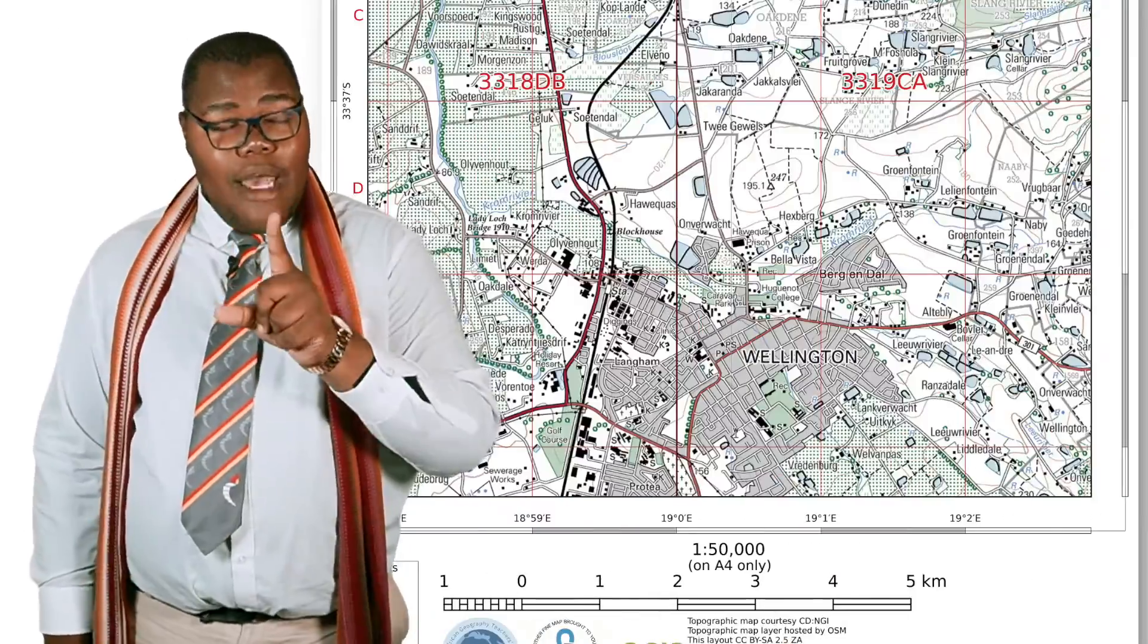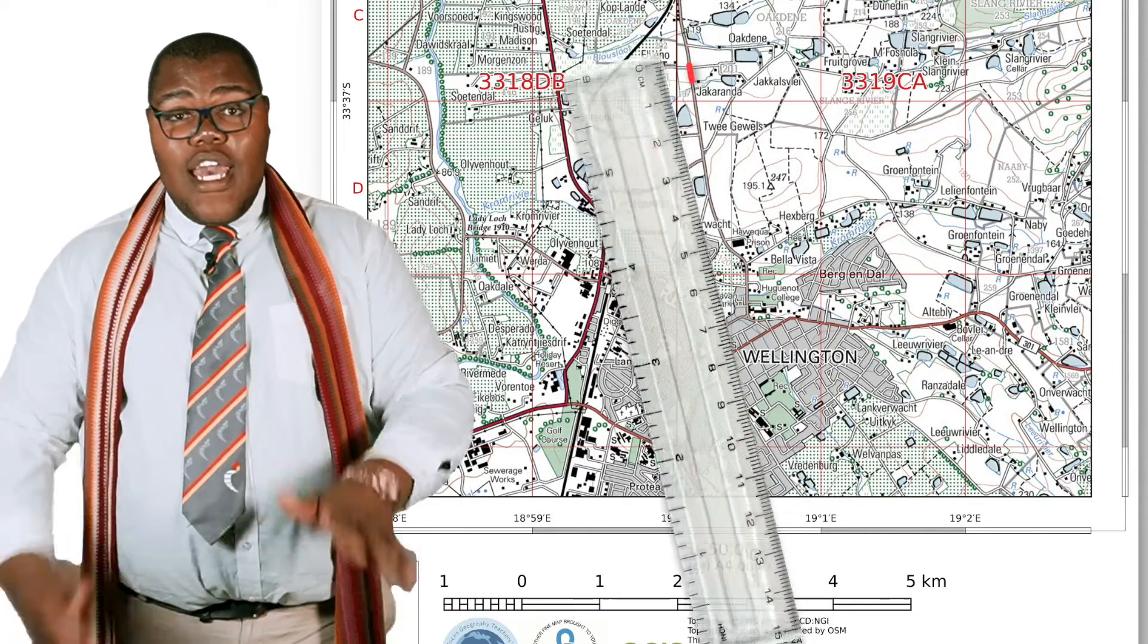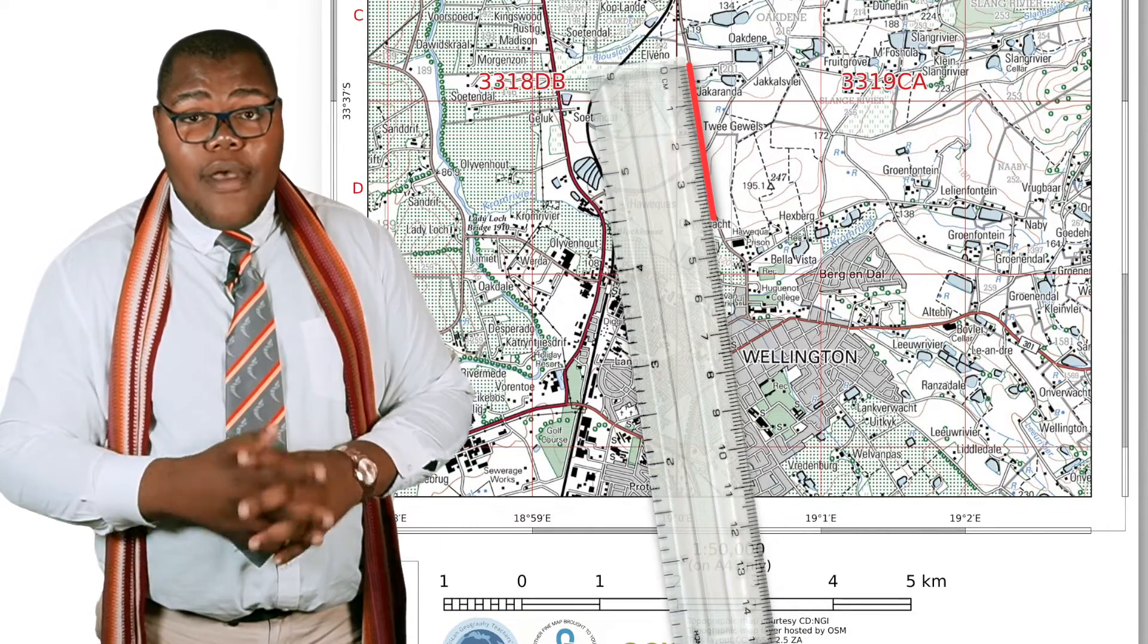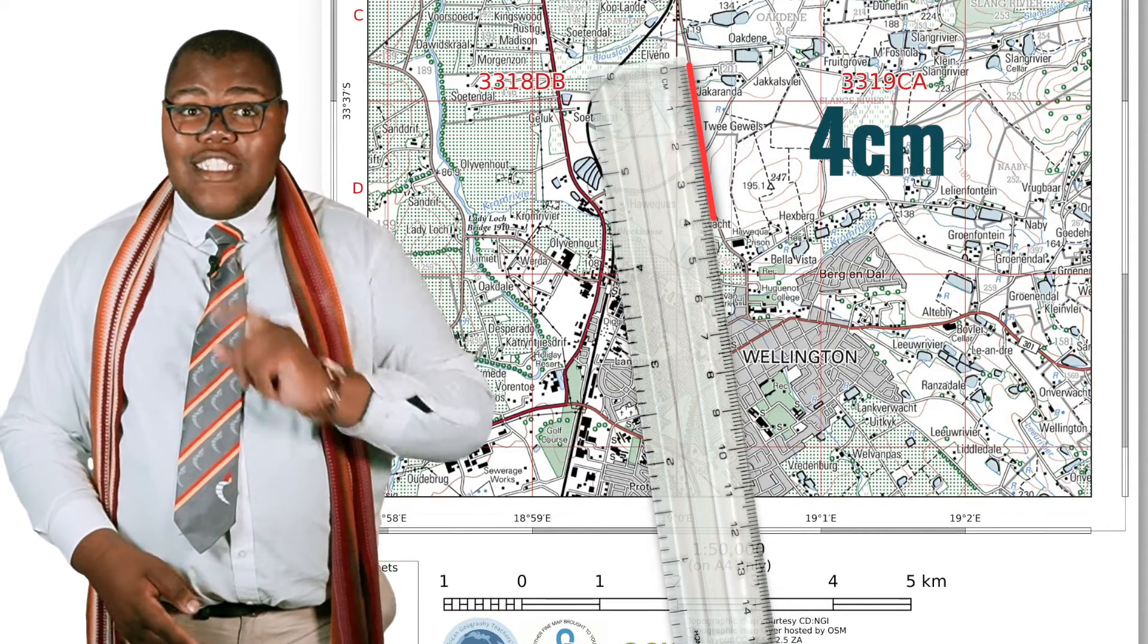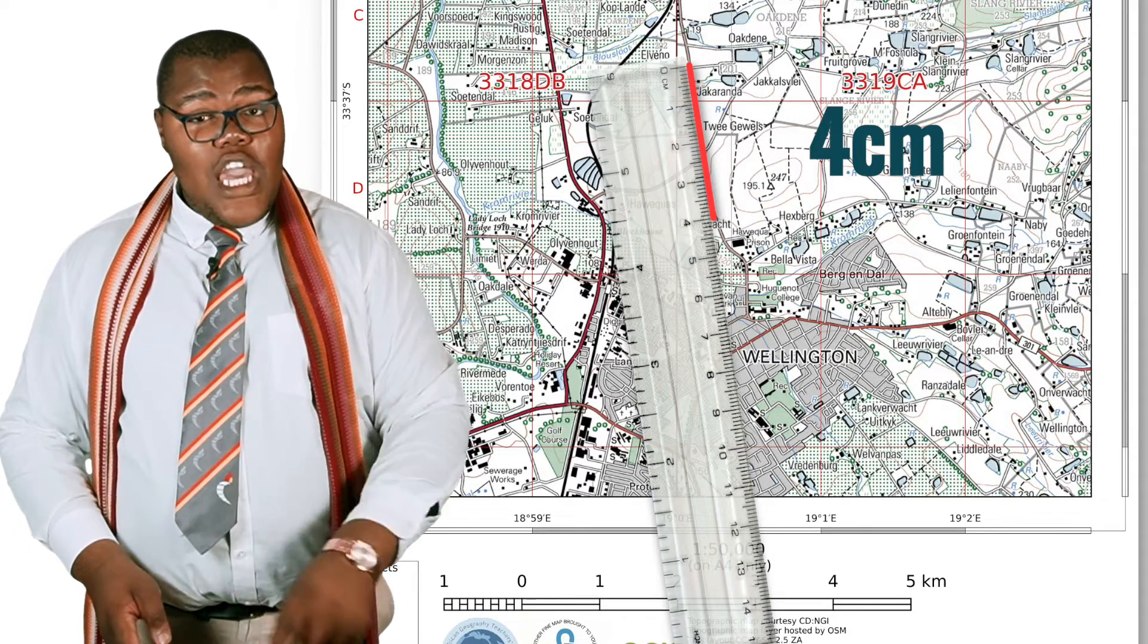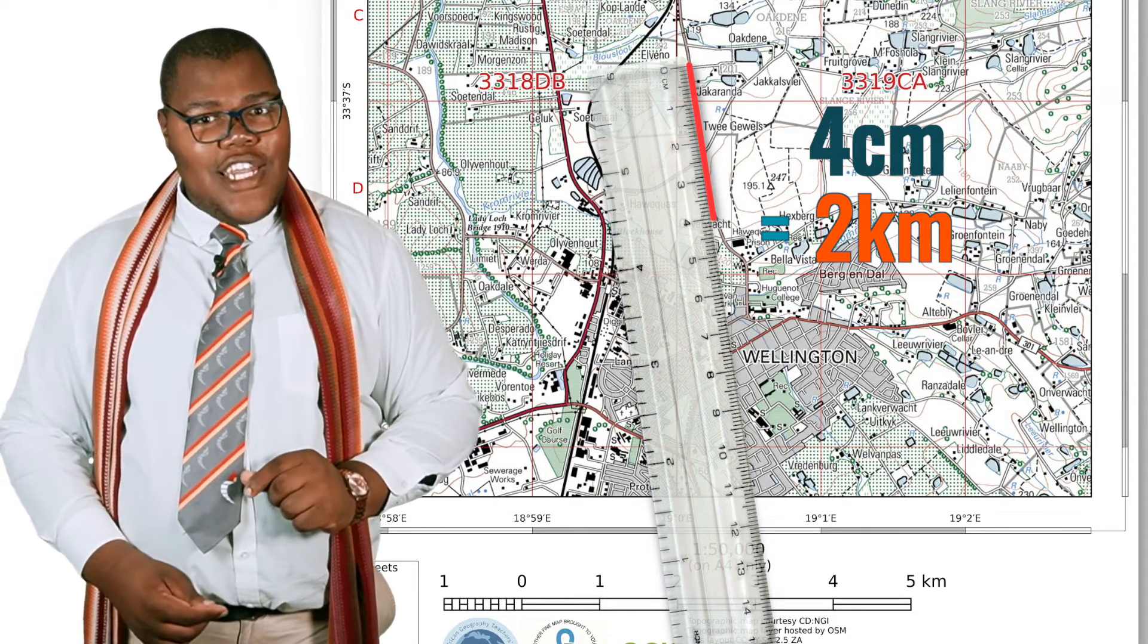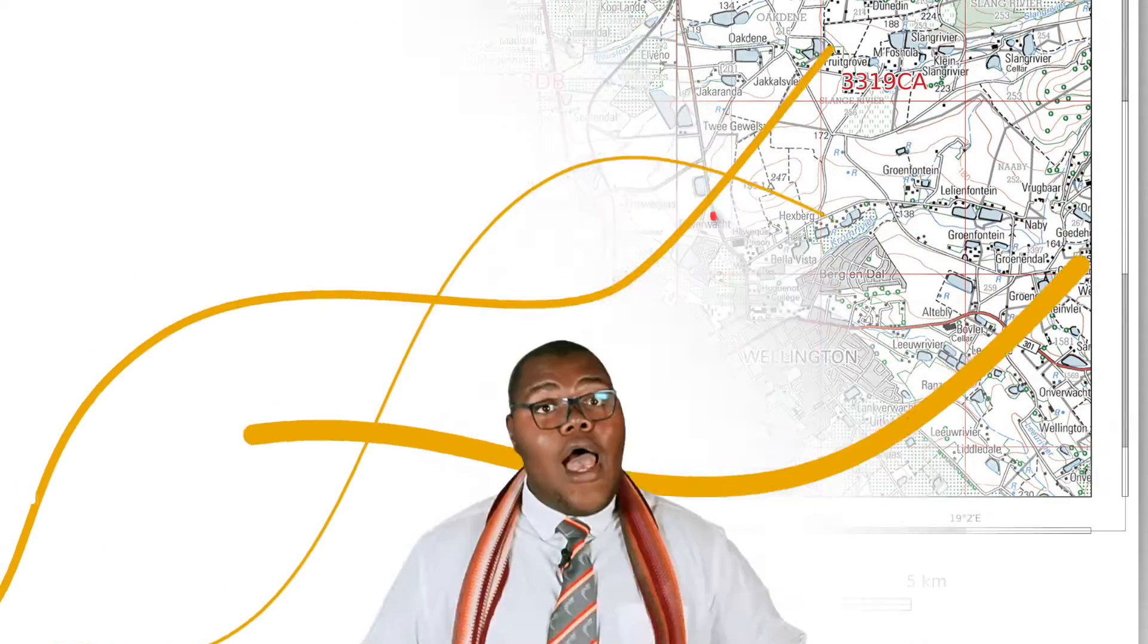Now, I have a Wellington map. I measured a straight road on my map that measured 4 centimetres. Now, this should be 2 kilometres in reality.